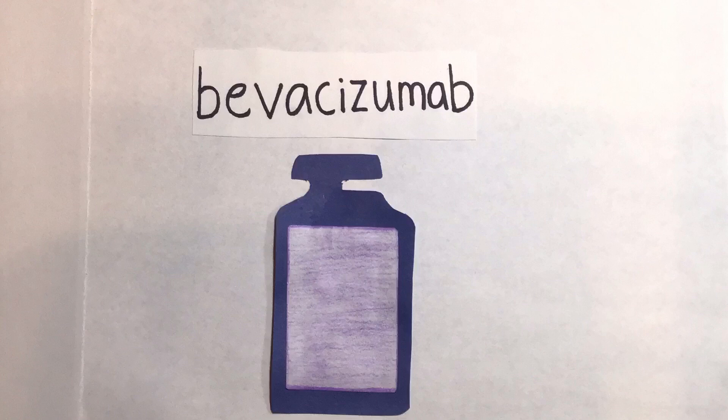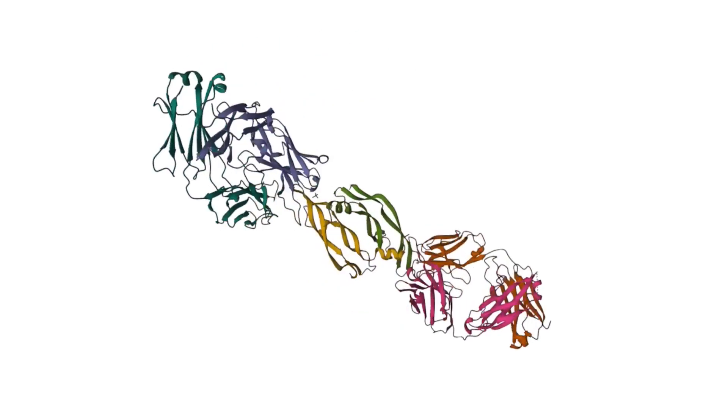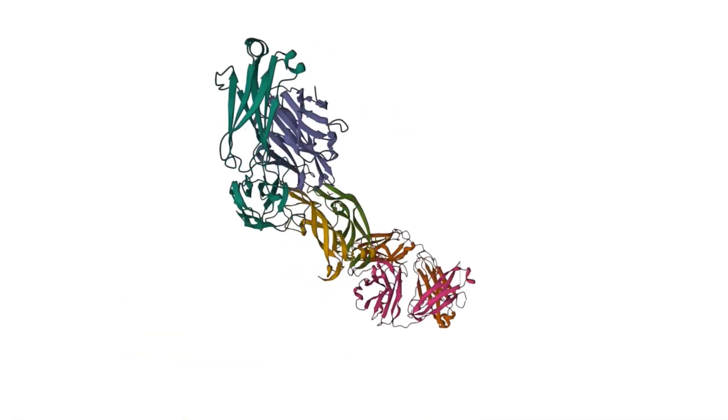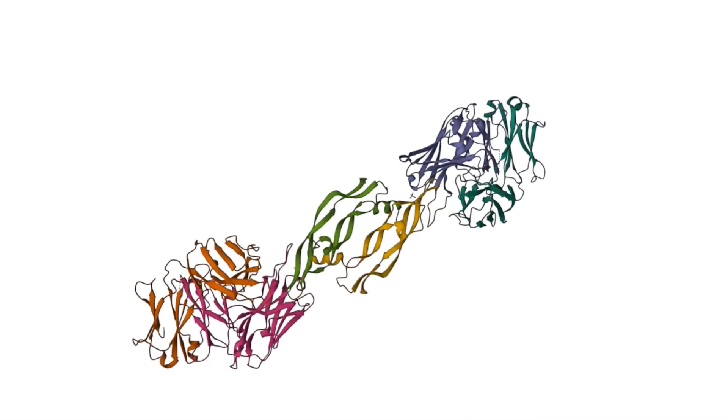One example of such a drug is the anti-VEGF antibody drug bevacizumab, which can bind to VEGF produced by tumors. As shown in the animation, bevacizumab attaches to VEGF on both sides.